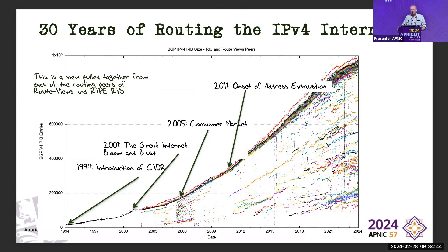There are two astonishingly good projects that try to collect BGP views from many places. One is RIPE's RIS, the Route Information Service, and the other is the University of Oregon's Route Views project, which is the backbone of these slides. This is a very busy slide because each dot represents one peer of RIS or Route Views — one BGP speaker — in about an eight-hour window. There are three samples per day going back to around 1994.